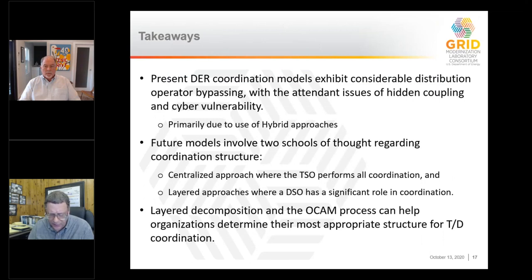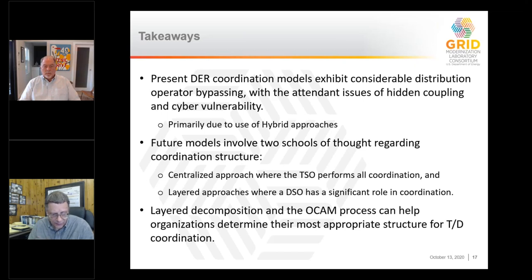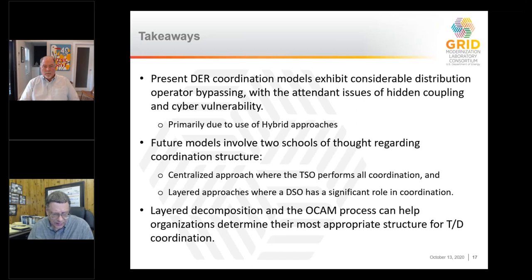Some things to think about: a lot of the current approaches to DER coordination and transmission-distribution coordination have the problems we talked about — tier bypassing, hidden coupling, cyber vulnerabilities — and a lot of that really comes about in the hybrid approaches, especially if they are being developed on an ad hoc basis. Future models roughly have two schools of thought: a centralized approach with the TSO doing everything, and layered approaches where the DSO has a significant role. A lot of folks are looking at hybrid models as an intermediate step, but those can get complicated, so be cautious. We've laid out a simple building block model — layer decomposition — and the Ockham process to help you think through how this will be structured, and that works at many different levels including at the regional transmission-distribution level.